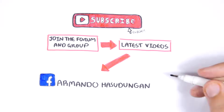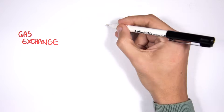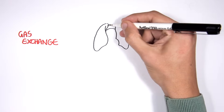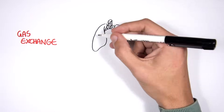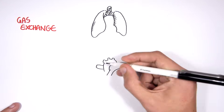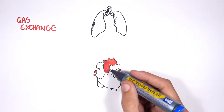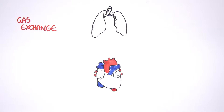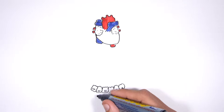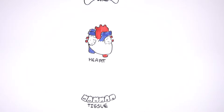In this video we're going to look at gas exchange — essentially how gases are transported around our body, the oxygen and carbon dioxide, and how our tissues receive oxygen and how our lungs receive carbon dioxide so we can exhale it. So let's begin this journey with the lungs, and here I'm drawing the heart as well, and also tissues.